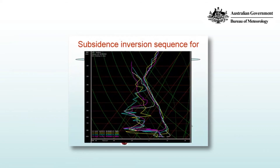Here's another sequence. The magenta trace is at 23 UTC on the 16th, and the yellow trace is at 23 UTC on the 17th. You can see how the inversion has dropped over time. The final trace at 11Z on the 18th — the lowest inversion — is actually a radiation inversion. But you can see how the inversion can change over a period of a day or so; it can lower quite significantly.